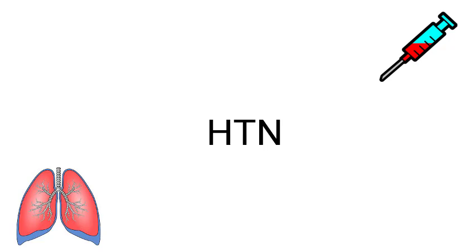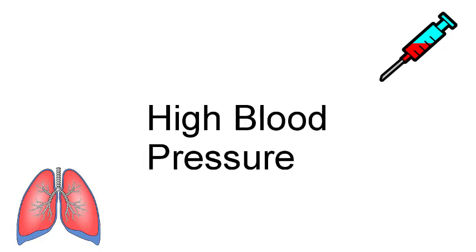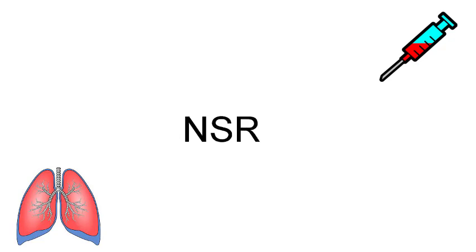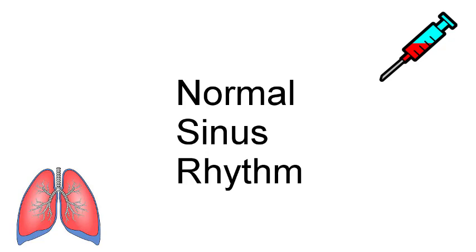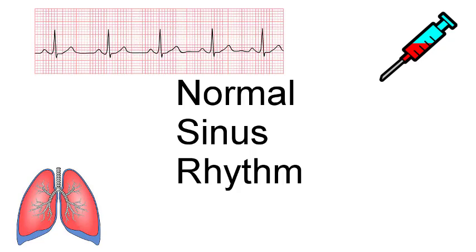HTN is hypertension, or high blood pressure. That's why they have that strange abbreviation. NSR is normal sinus rhythm. Normal sinus rhythm is your regular heart rhythm. You'll probably see the picture I'll put up right here — that's a heart rate monitor showing a normal sinus rhythm, a regular rhythm.